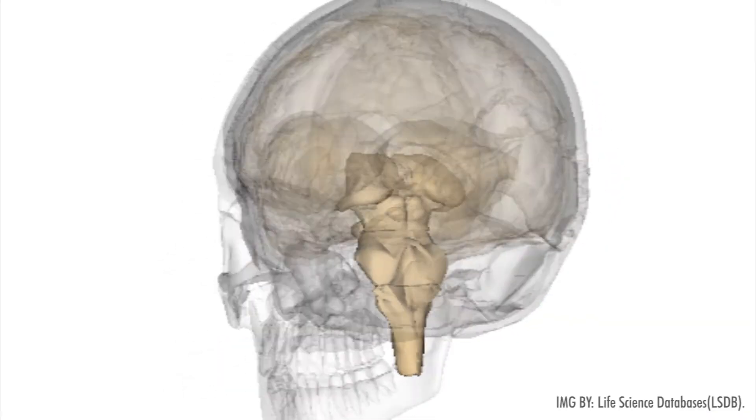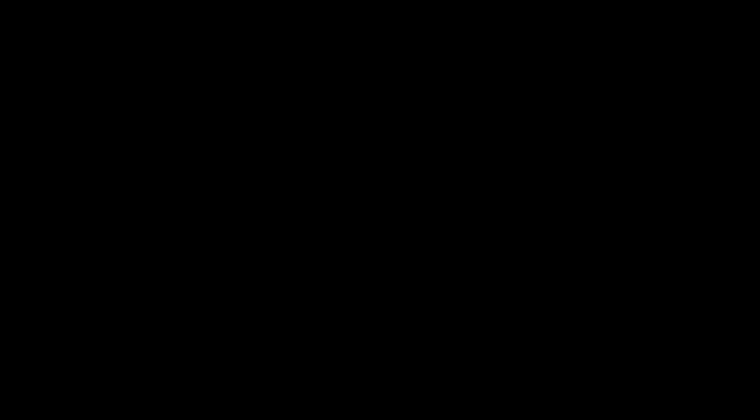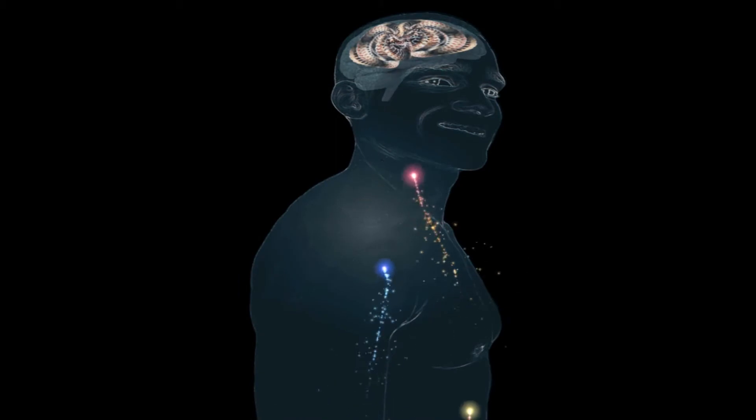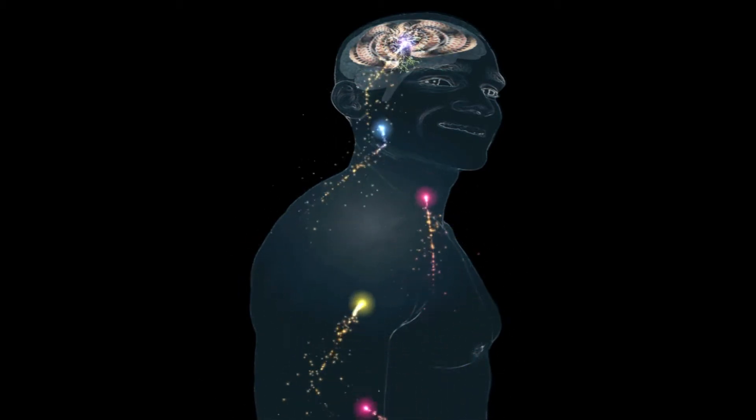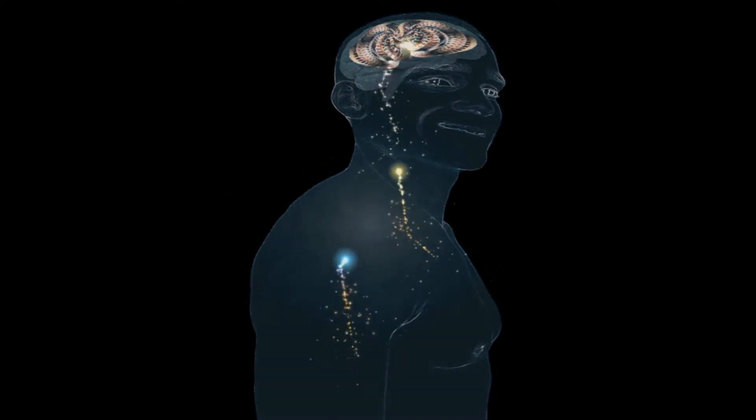The pituitary gland is oftentimes called the master gland and for a very good reason. It's responsible for the growth and development of the body and the production and regulation of hormones. It affects nearly the entire endocrine system, also known as the HPAT axis, hypothalamus-pituitary-adrenal-thyroid axis.